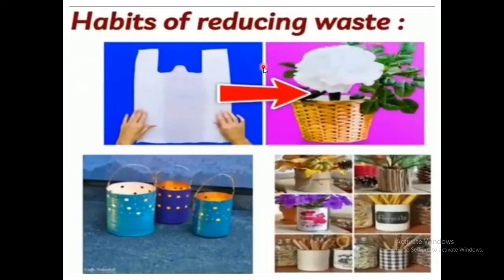Now, habits of reducing waste. We can reduce waste by recycling. Here you can see in this picture that paper bags can be converted into beautiful decorative flowers to decorate our homes. Tin bottles can be used to store many things, and used bottles can be made into pen stands. We can reduce waste by making waste into useful things. We have to reuse things and make them useful.